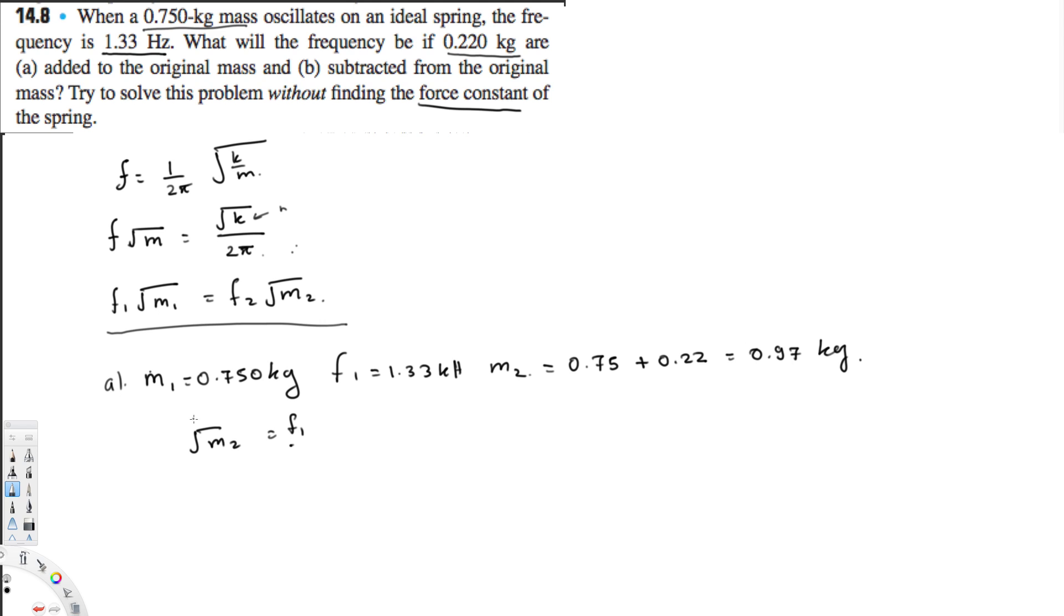be equal to f₁ times square root of m₁ over square root of m₂. So that is going to equal 1.33 Hertz multiplied by square root of 0.750 kilograms divided by square root of 0.970 kilograms